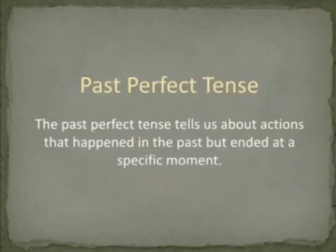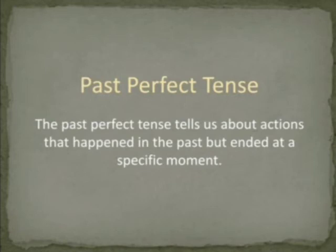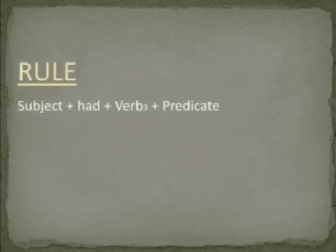The third type of past tense is past perfect tense. The past perfect tense tells us about actions that happened in the past but ended at a specific moment. The rule of past perfect tense is: subject plus had plus verb three plus predicate.